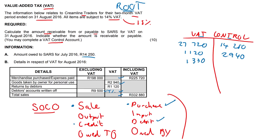Total sales — sales are definitely going on the credit side. This figure is including VAT, so to get the VAT amount we calculate 332,880 times 14 over 114. Remember, if you get the included VAT amount in your exam paper, it will be times 15 over 115. We get a VAT amount of 40,880.